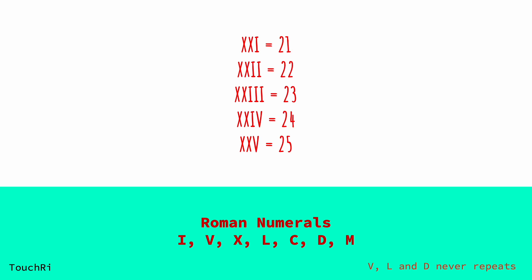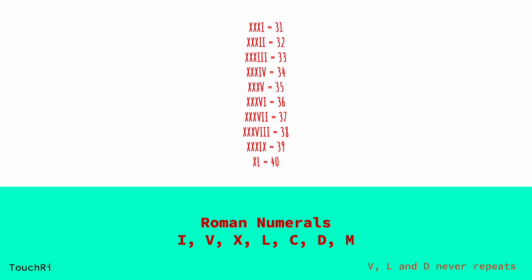On the other hand, when a smaller value comes before a larger value, you subtract the smaller value. If we have IV, the I (1) is subtracted from V (5), resulting in 4.